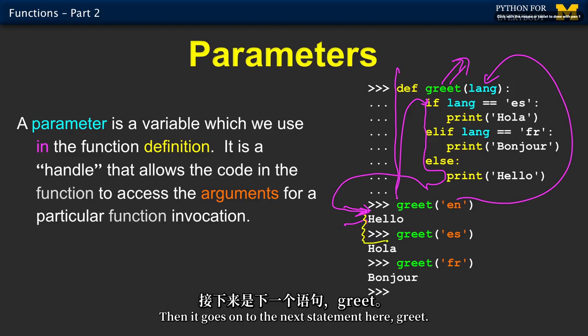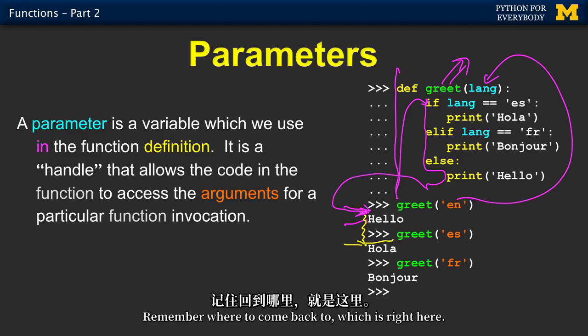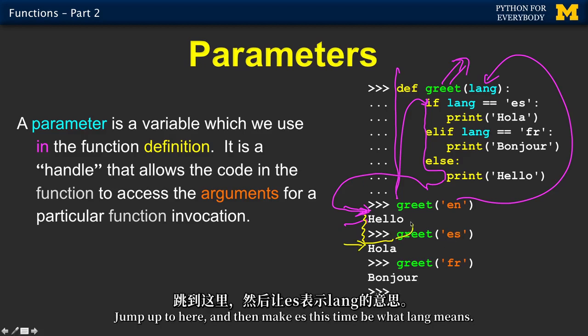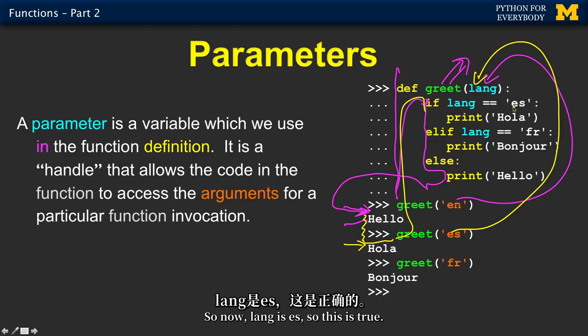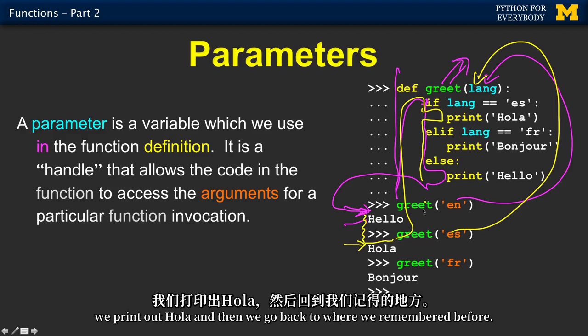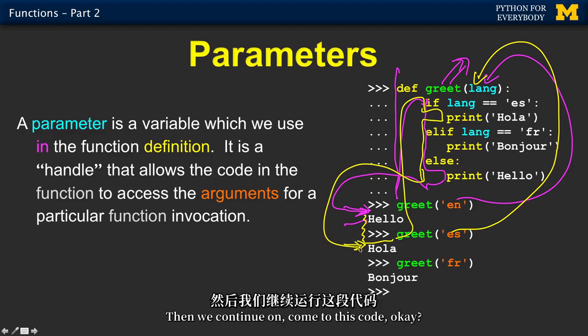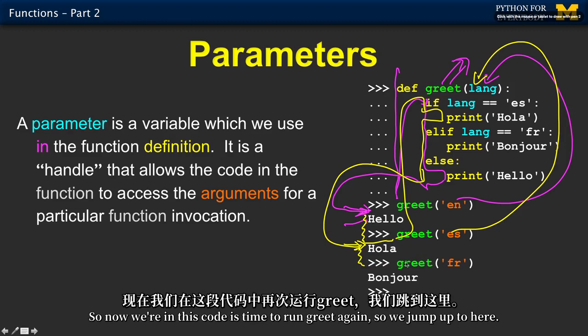So it's like lang is not es. Lang is not fr. So this code runs. Out comes hello. And then we're done. And it says go back to where you remembered you were supposed to pick up next, which is here. So it says pick up next. Then it goes on to the next statement. Here. Greet. So it's going to run this function again. Remember where to come back to, which is right here.